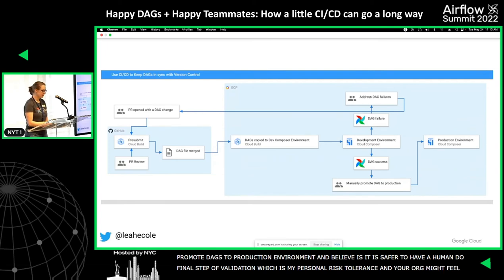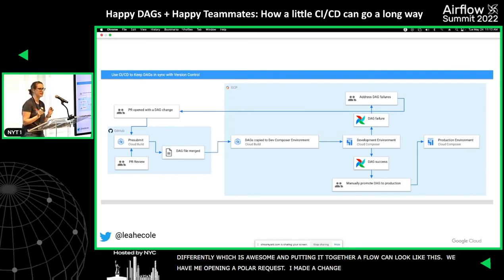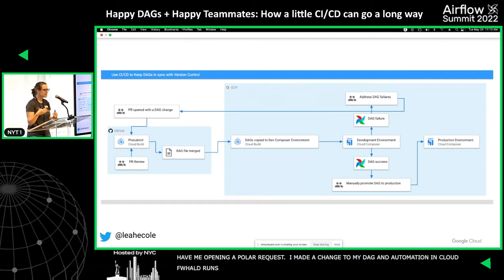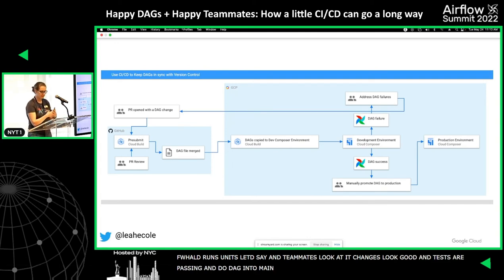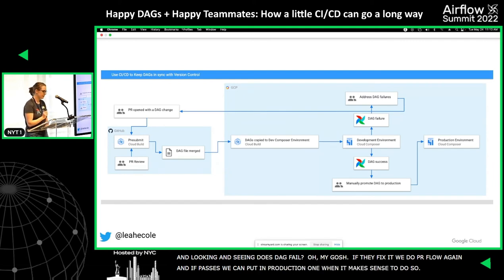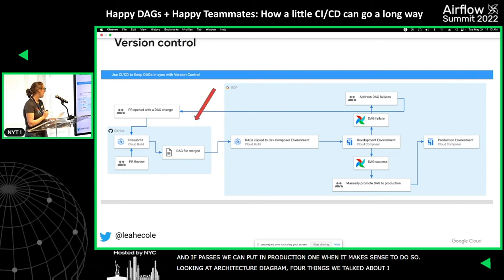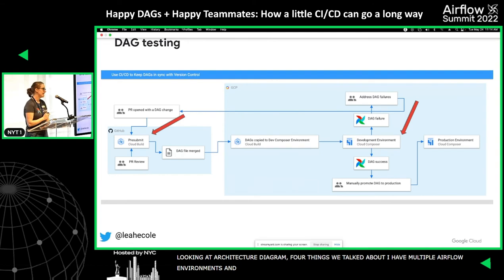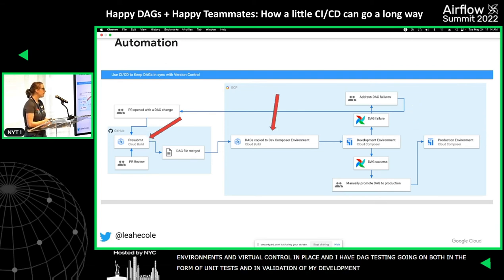If we put it all together, a flow would look something like this: I open a pull request because I made a change to my DAG, then automation in Cloud Build runs unit tests. My teammate looks at it, says the changes look good and tests are passing, so we merge the DAG into our main branch. The DAGs then get copied into my development environment. If the DAG fails I fix it and do the PR flow again, but if it passes I can manually put it in production when it makes sense. The four things: multiple Airflow environments, version control, DAG testing with unit tests and dev validation, and automation for running tests and copying DAGs to dev.